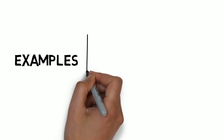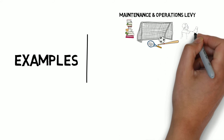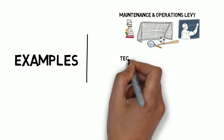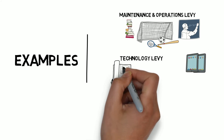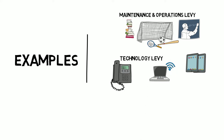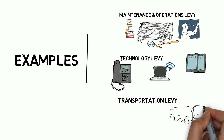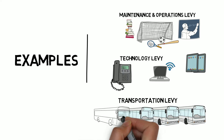Here are a few examples of what a levy might look like. A maintenance and operation levy could pay for things like library books, curriculum, extracurricular activities, or provide competitive salaries for teachers. A technology levy can buy new equipment for classrooms, improve communication systems, and create new learning opportunities with modern tools. A transportation levy could pay for new buses or major repairs on older buses, improve fuel efficiency, and help prolong the life of an existing bus fleet.